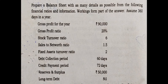Prepare a balance sheet with as many details as possible from the following financial ratios and information. Assume 360 days in a year — remember this for computation of debt collection period as well as credit payment period. In the question, gross profit ratio, stock turnover ratio, sales to net worth, fixed asset turnover ratio, debt collection period, and credit payment period are all given. Credit payment period is a new adjustment. The surplus is given, plus 50,000 long-term debt is given.